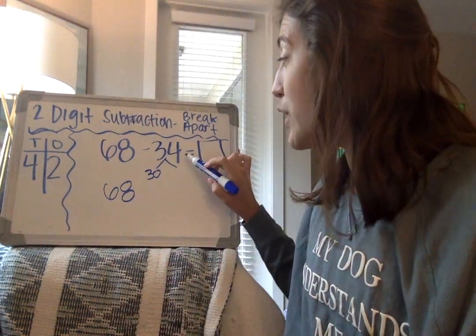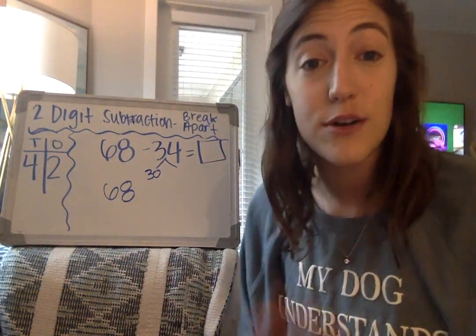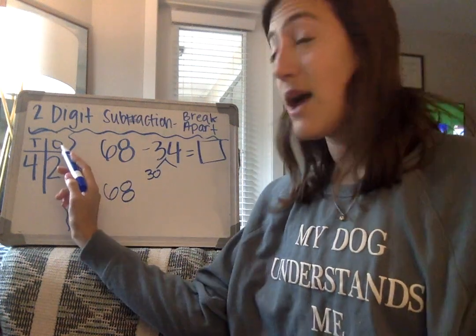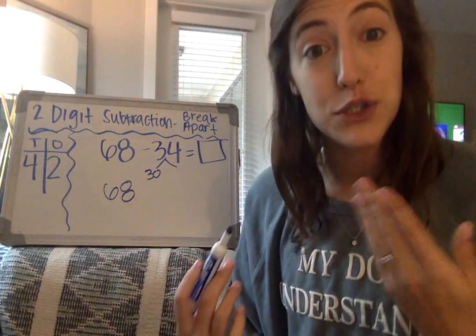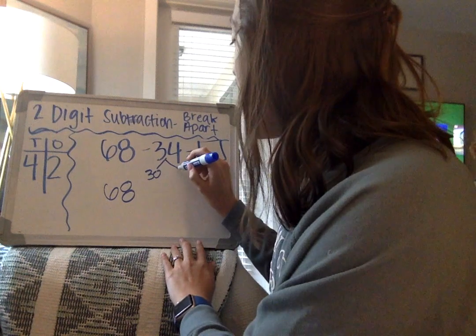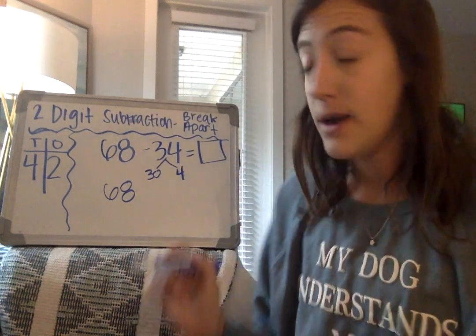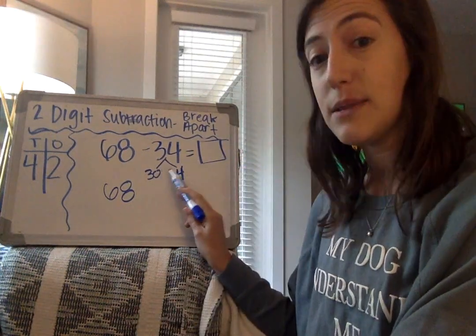Now I look over in my ones place. I see that there is a 4 in my ones place. Because it's in my ones place, I know that it's simply just worth 4. So I know that the expanded form of 34 is 30 plus 4.